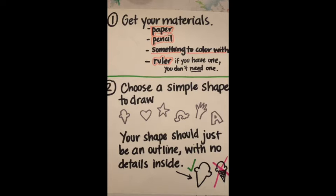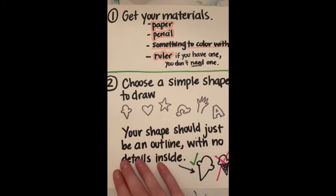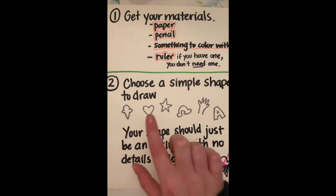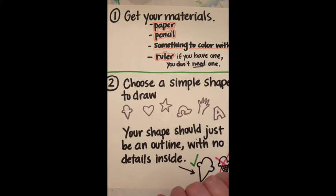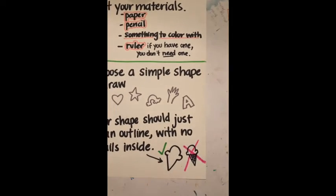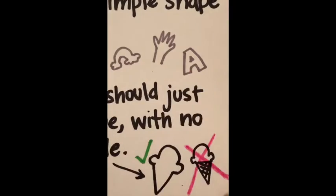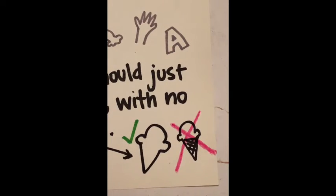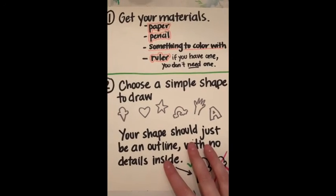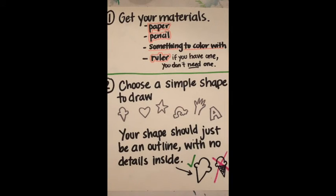You can use the side of a book if you want straight lines. Step two is to choose a simple shape to draw. Your shape should just be an outline with no details inside. For example, this ice cream—I did the outline but nothing inside. It has to be empty inside. You could trace your hand. I like to do a heart, but any simple shape you can think of works.